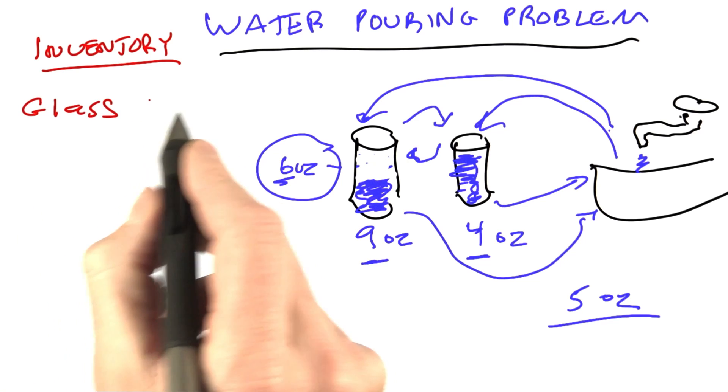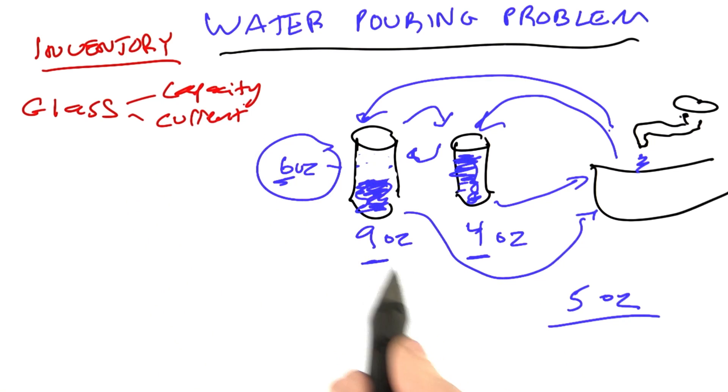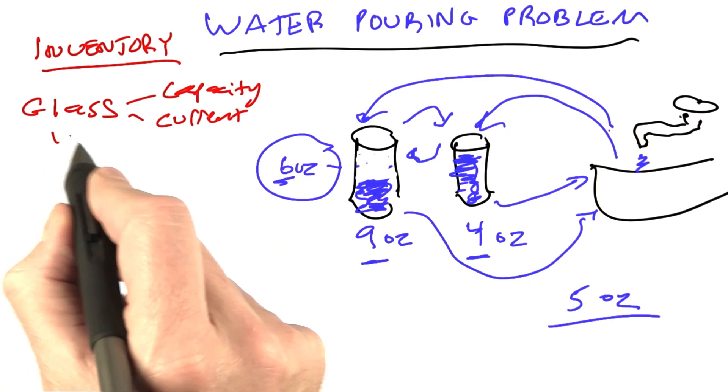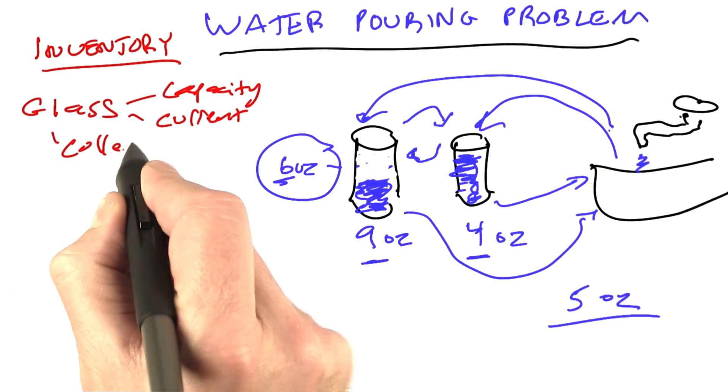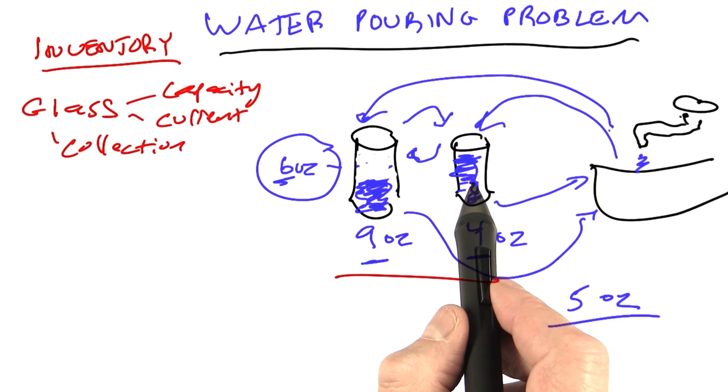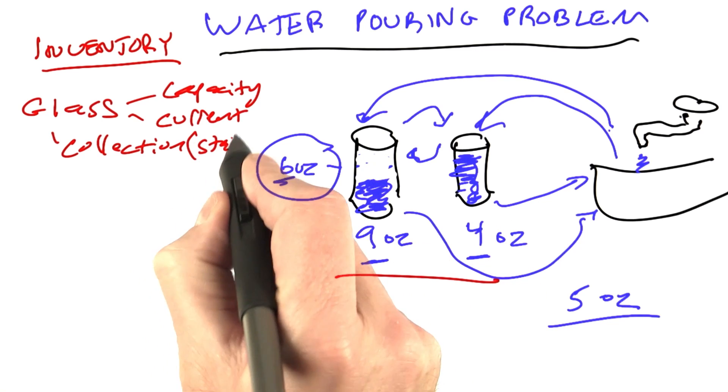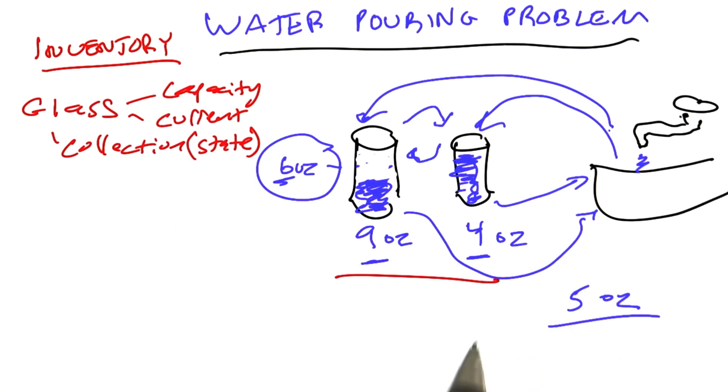We have the glass, and the glass has capacity and a current level, so this glass would have capacity 9 and current level 5. We're also going to need a collection of glasses probably, a pair of glasses. And I guess we can say that the pair of glasses and their current levels represents a complete state of the world. So we'll think of that as a state of the world, everything we need to know about where we are in the problem.